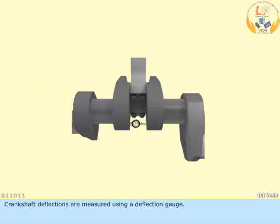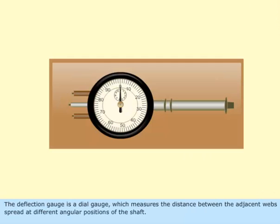Crankshaft deflections are measured using a deflection gauge. The deflection gauge is a dial gauge which measures the distance between the adjacent webs spread at different angular positions of the shaft.